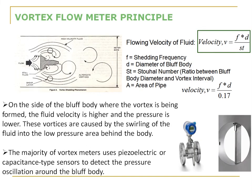The flow meter principle gives the formula: velocity of fluid flow v = f × d / St, where f is the shedding frequency (vortex formation frequency), d is the diameter of the bluff body, and St is the Strouhal number. Since we are in the Reynolds number range of 20,000 to 7,000,000, the Strouhal number is given as 0.17.